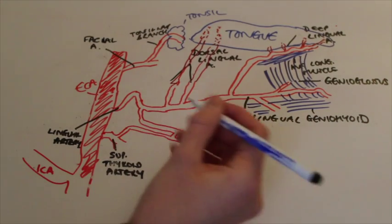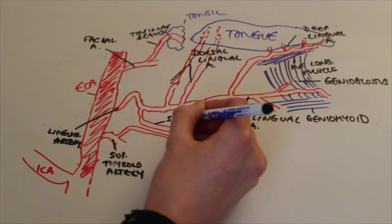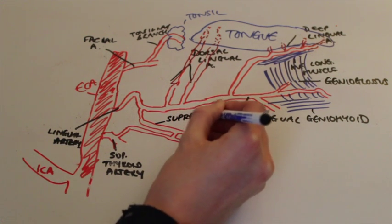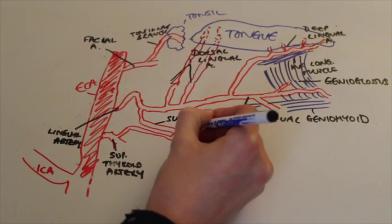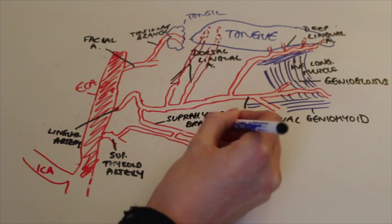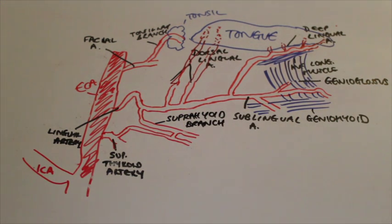The first branch of the lingual artery is actually the suprahyoid branch of the lingual artery. However it runs along the upper border of the hyoid bone and supplies blood to the muscles attached to it as opposed to the tongue itself. I hope this video has been useful for you and please do go and try some of the quizzes to see how much you've learned.